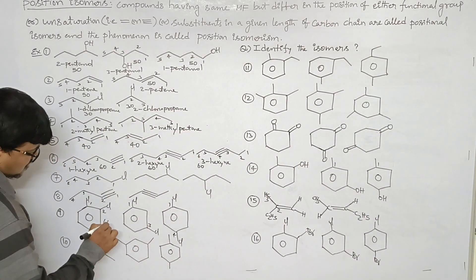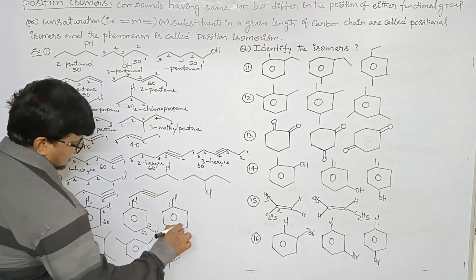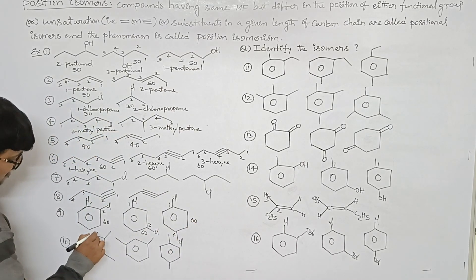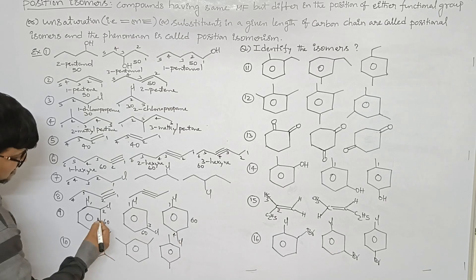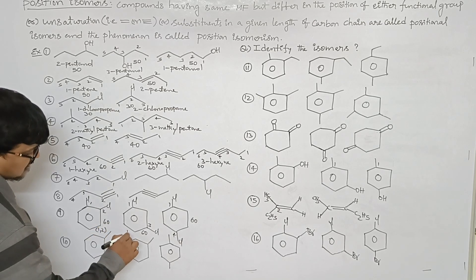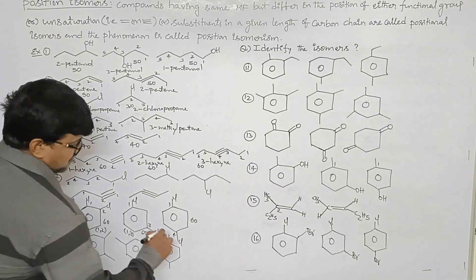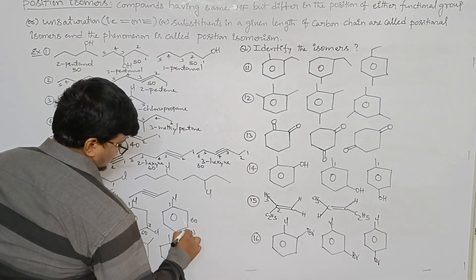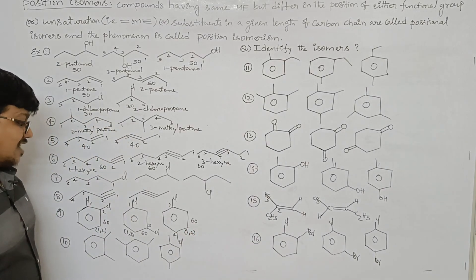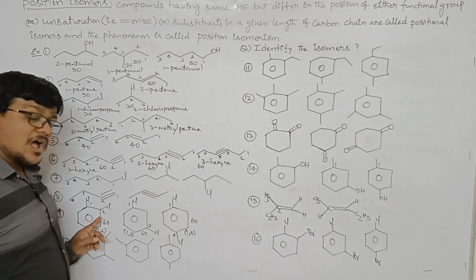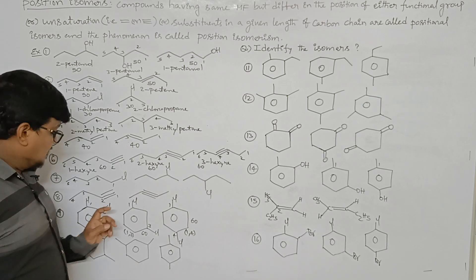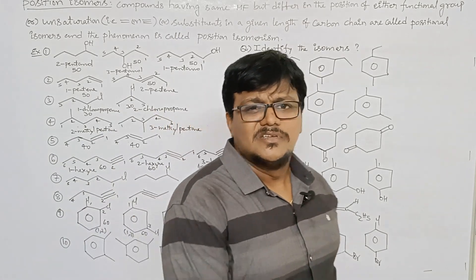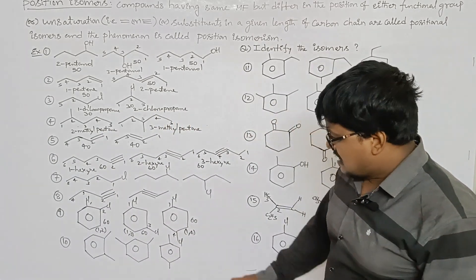All three dichlorobenzene compounds have isomeric number 60. The first compound has chlorines at the 1,2 positions (ortho), the second at 1,3 (meta), and the third at 1,4 (para). These three are positional isomers.